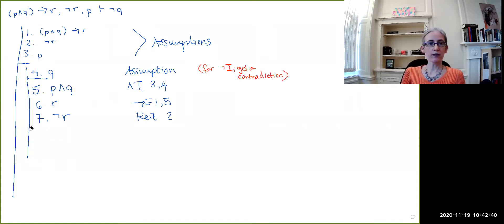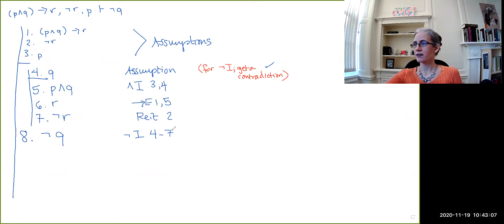From the assumption of Q, I was able to prove both R and not R. I need to make that scope line a bit shorter. I was able to prove both R and not R. Look, I got a contradiction. So now I can close off this little sub proof. And over here on line eight, I can say, it has to be the case that not Q. Negation introduction, lines four to seven. There you have it.